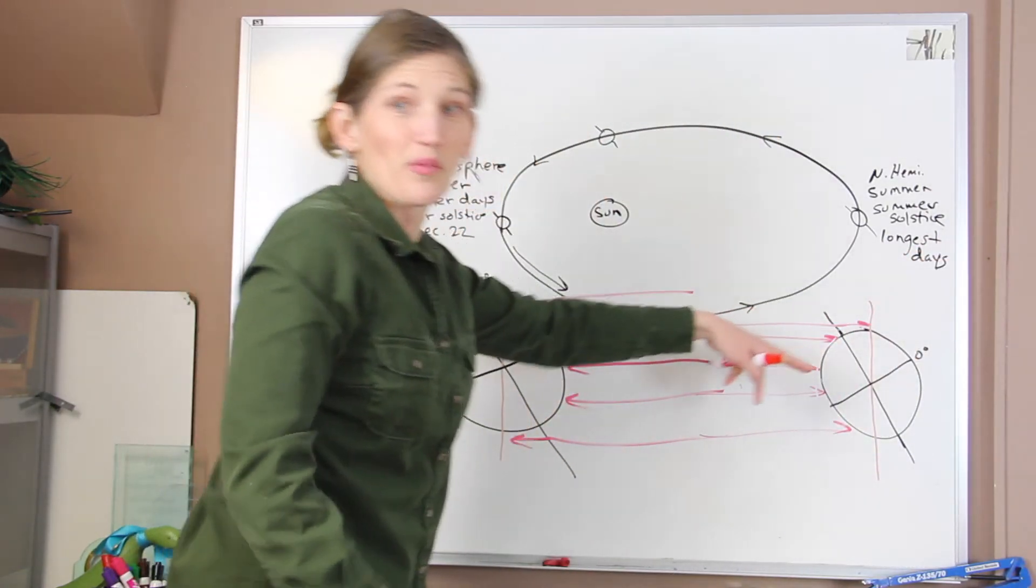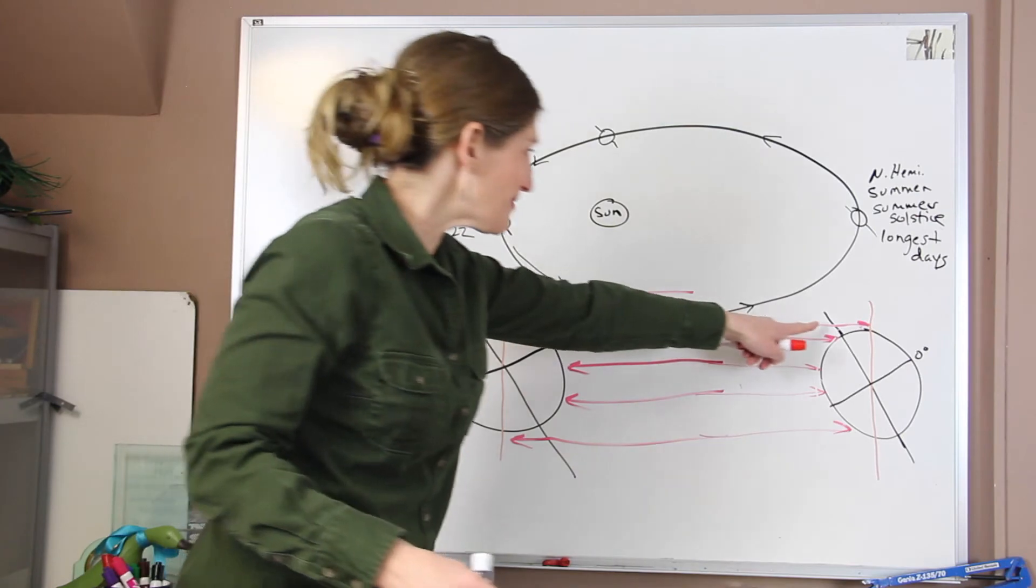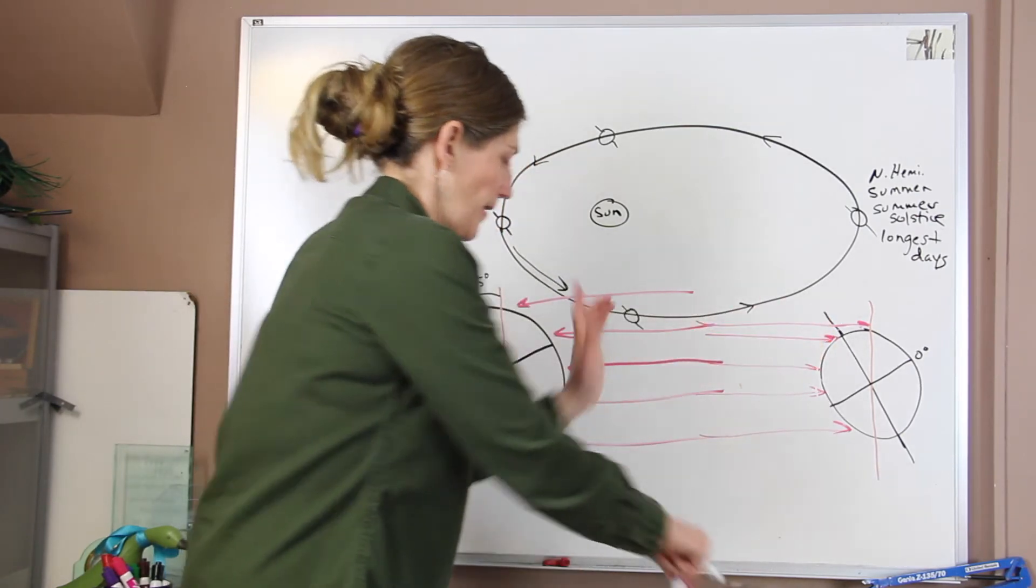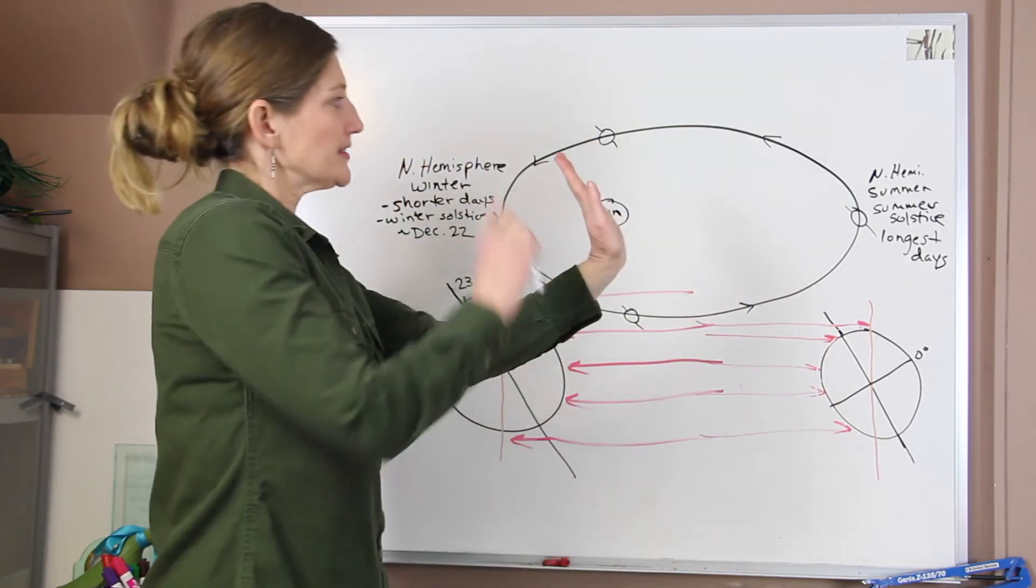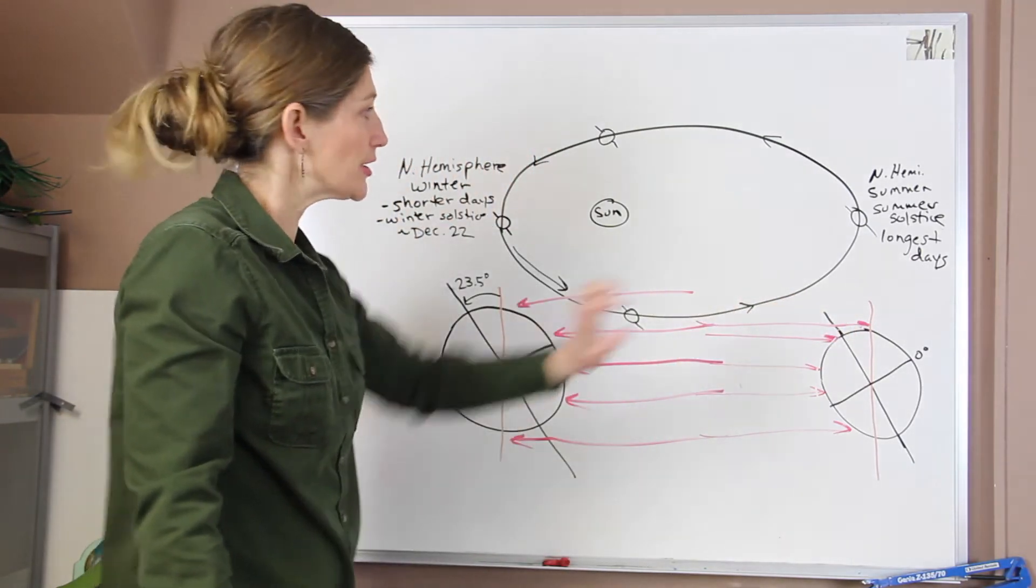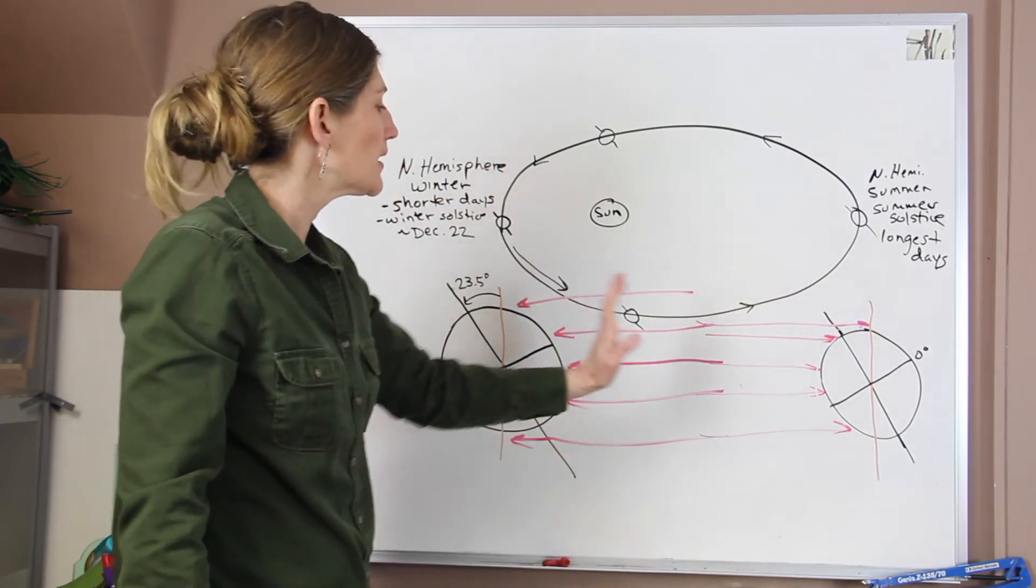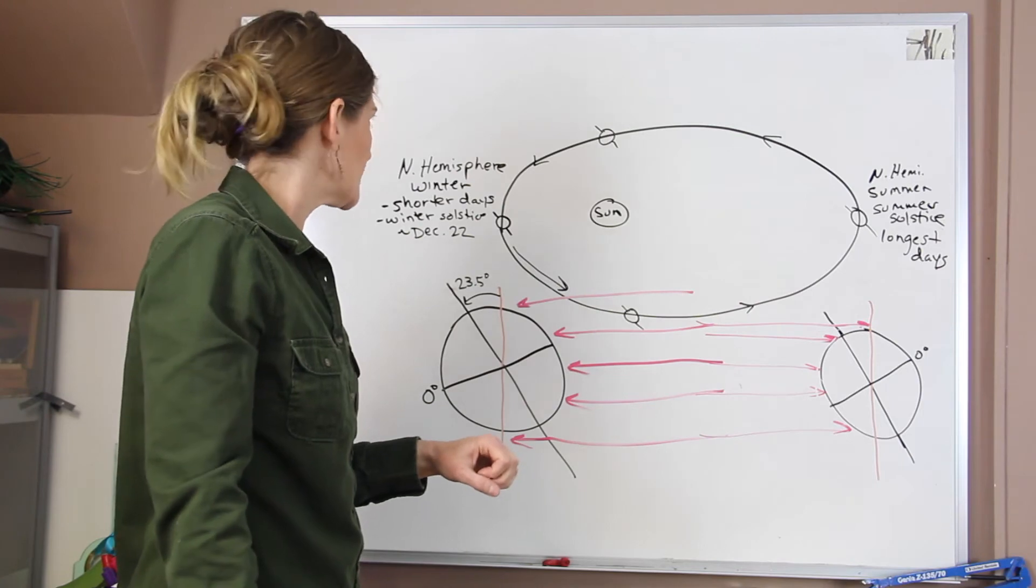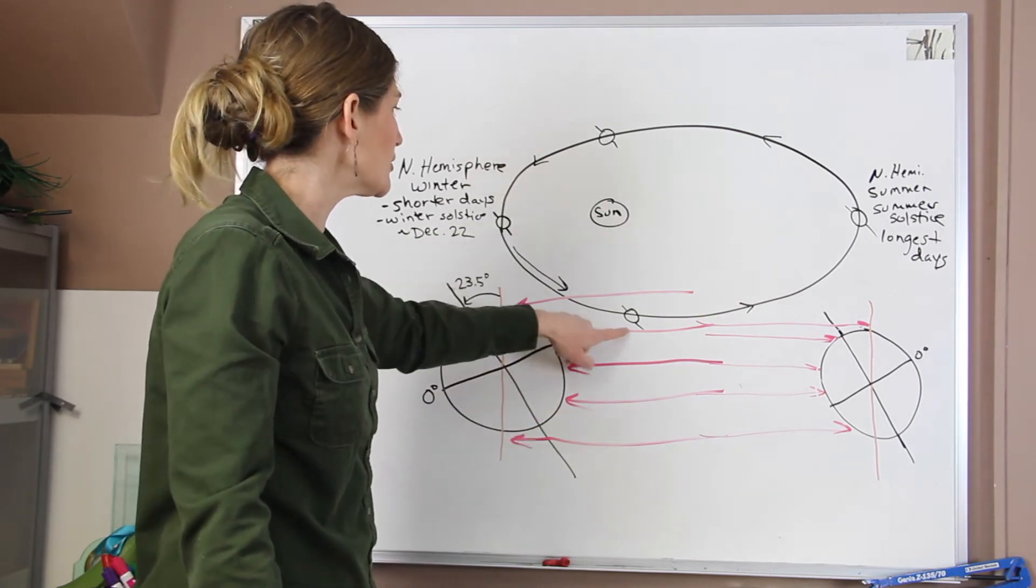And if you're at the north pole, that's your 24 hours of daylight. Because as you can see, as that north pole, that axis is rotating, it's always in the sunlight. So you have those really long days. And that's our summer position.